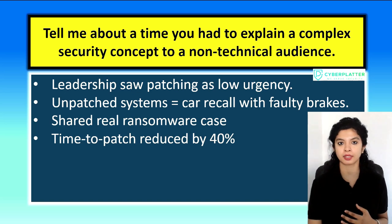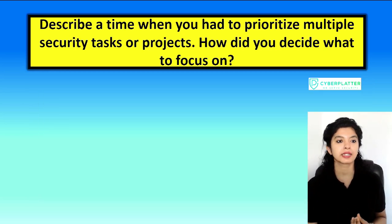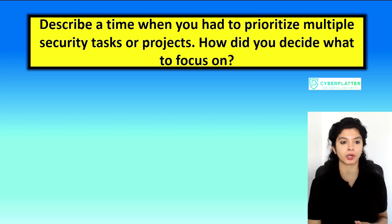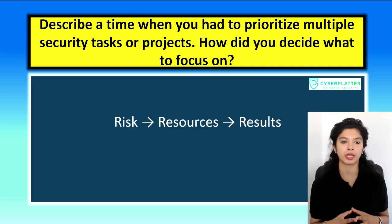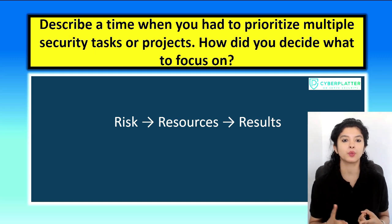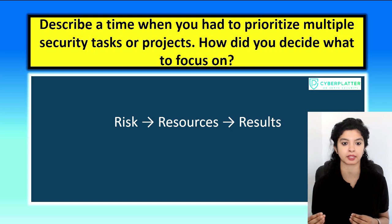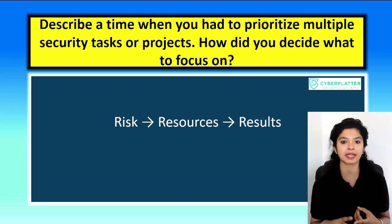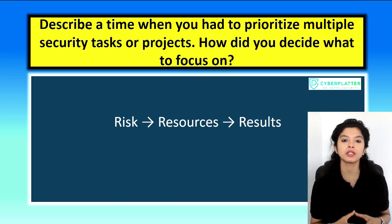This is how you answer this question. Let's move on to the next one. Describe a time when you had to prioritize multiple security tasks or projects. How did you decide what to focus on? So you need to frame your answer around risk, resources, and results. Risk is which threat or project had the biggest potential business impact. Resources — what constraints did you consider like time, staff, or budget? Then results — what outcome showed your prioritization was effective?